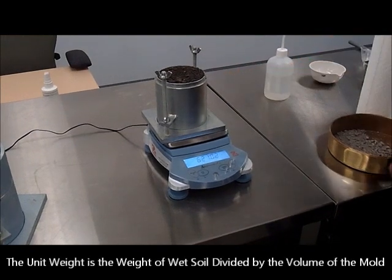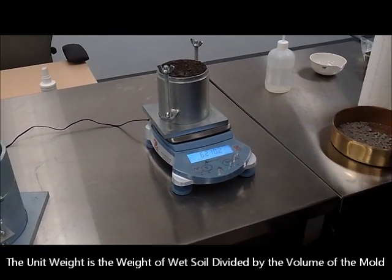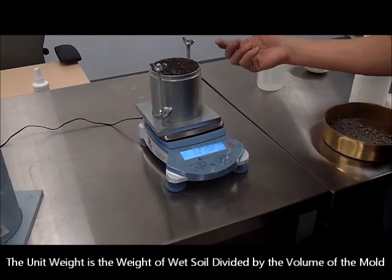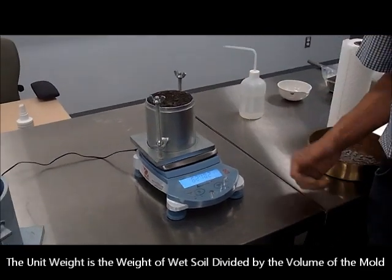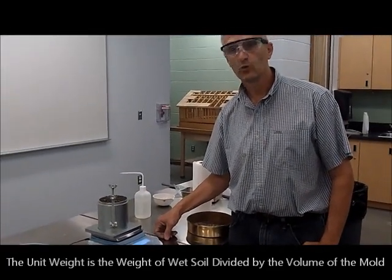Since we know that the volume is exactly 1 over 30 of a cubic foot, and now we know how much mass of wet soil I have in there, I can calculate a wet density or wet unit weight of the material.